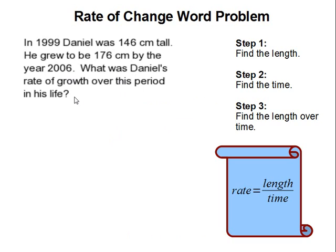What was Daniel's rate of growth over this period in his life? Now, the rate of change is the length over time. In this case, how much he changed within the period from 1999 to 2006.